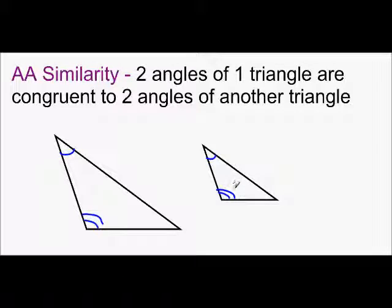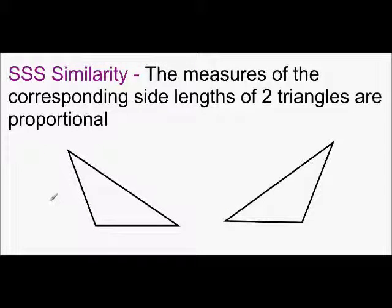You only need two angles to show that your triangles are similar. Next, we have SSS, or side-side-side similarity. This happens when the measures of the corresponding side lengths of two triangles are proportional.